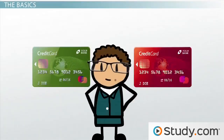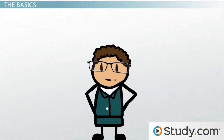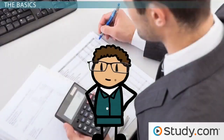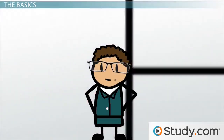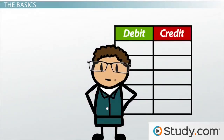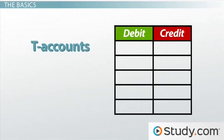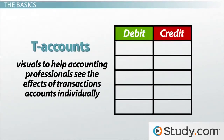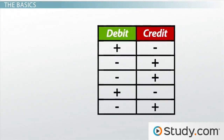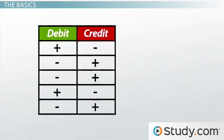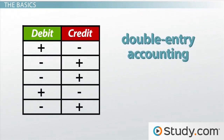Every business has various transactions that occur each day. Each of these transactions are examined by accountants and recorded in the accounts that they affect. In the first steps of accounting, accounts are broken down into T-accounts. T-accounts are simply visuals to help accounting professionals see the effects of transactions on accounts individually. The accounting system used most often today is called double-entry accounting.